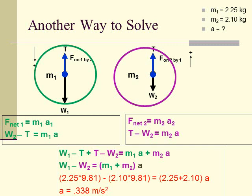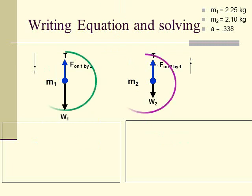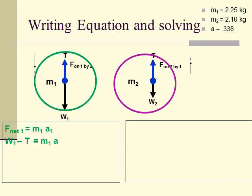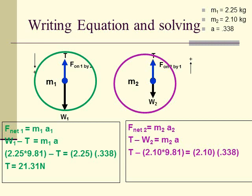Now let's find the tension. Again, to solve for just the tension between the two objects, we don't look at the whole system — we look at an individual object. I'll solve the first object: net force = mass × acceleration, just for mass 1. Setting up the equation and plugging in the known acceleration, I solve for tension and get 21.31 Newtons. Similarly, I can do the same with mass 2 — set up the equation, plug in values, and I get the same answer either way. I hope you've learned how to solve problems with two objects. Just keep in mind the steps.